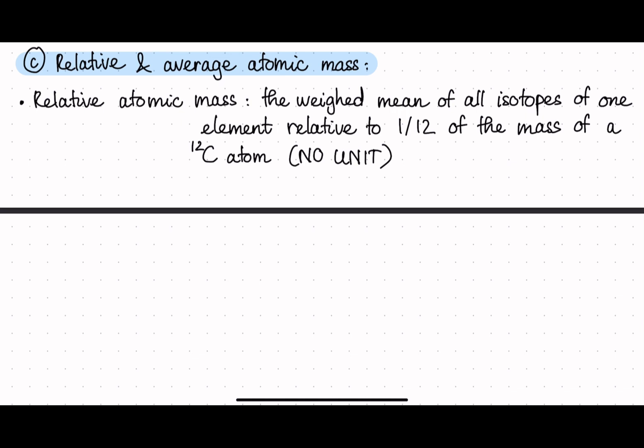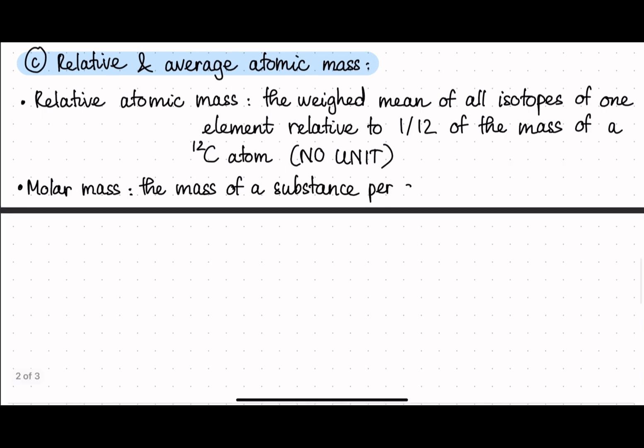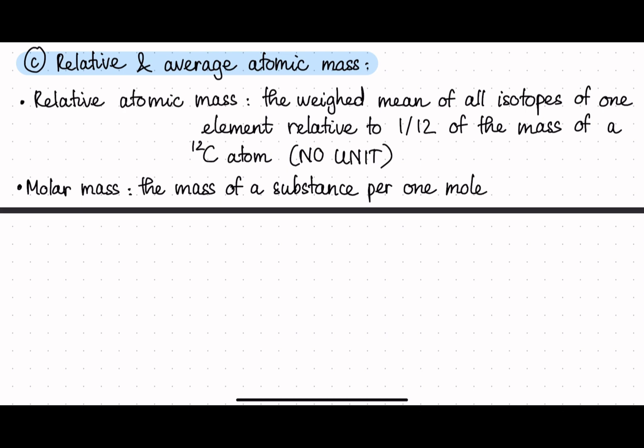Also, the second definition that we need to know in here is molar mass. So molar mass, different from relative atomic mass, is that it doesn't have the relative word in it. So we're not comparing it to anything. The molar mass is just the mass of a substance per one mole, and the unit is gram per mole. So relative doesn't have a unit, and molar mass has a unit.